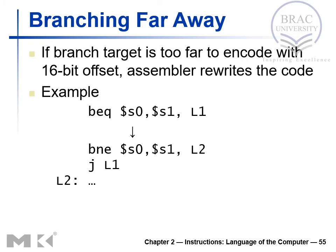What happens when a branch target is too far to encode with a 16-bit offset? In branching, we use I-type instructions with a 16-bit offset field, so we cannot directly address targets more than 16 bits away. The assembler helps us in this scenario by rewriting the code. For example, consider BEQ s0, s1, L1 — if L1 is farther than 16 bits away, this becomes a problem.